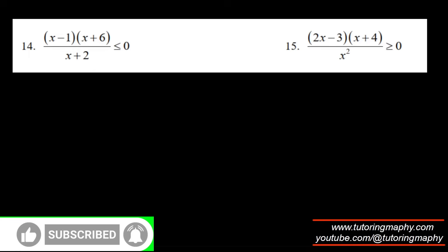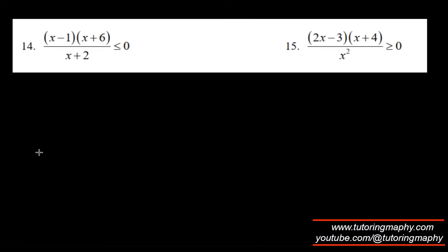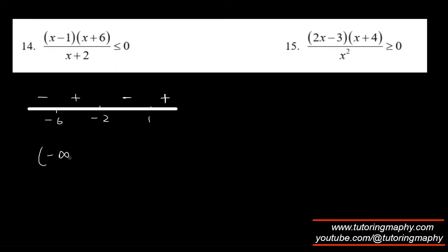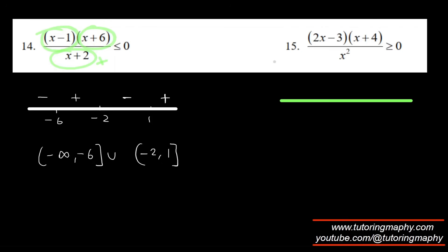For the next inequality, the number line has three roots: negative six, negative two, and one. Plugging in x equals 100 gives positive. Since all powers are odd, signs alternate: plus, minus, plus, minus from right to left. We need less than or equal to zero, so: negative infinity to negative six (negative six included — it's on the numerator) union negative two to one (negative two excluded — it's a denominator root; one included — it's a numerator root).